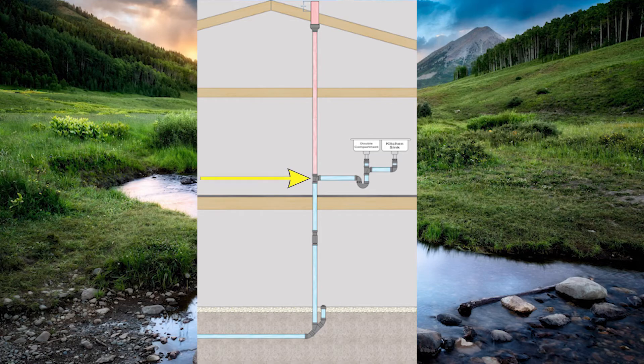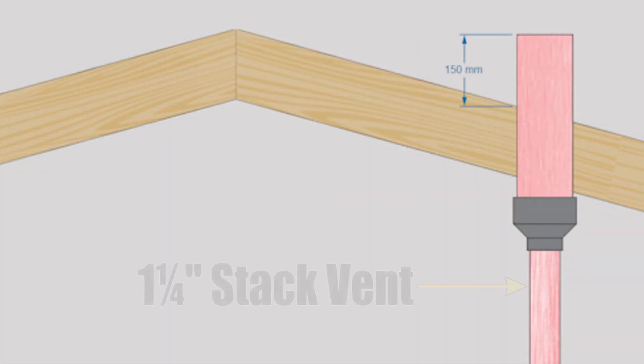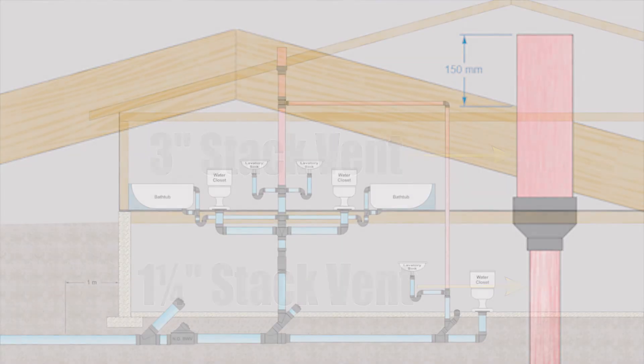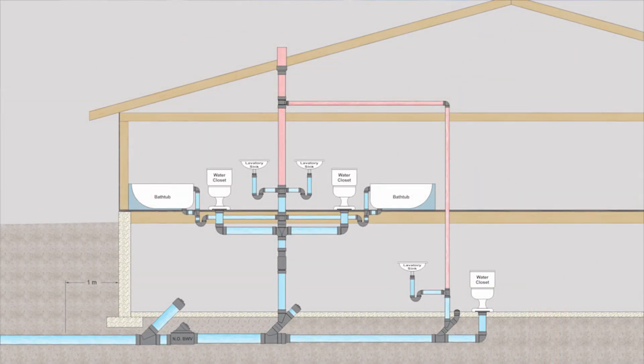Say for example that kitchen sink went straight up with the stack vent right through the roof. I would need to increase that one and a quarter inch pipe to three inch before passing the roof to protect from frost closure.